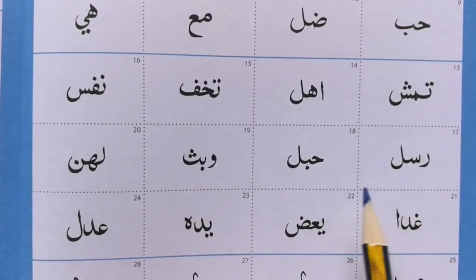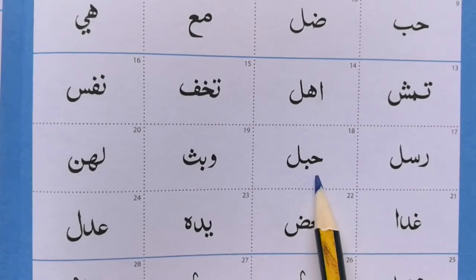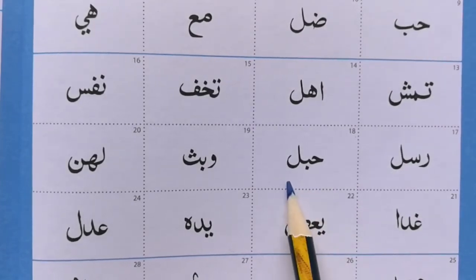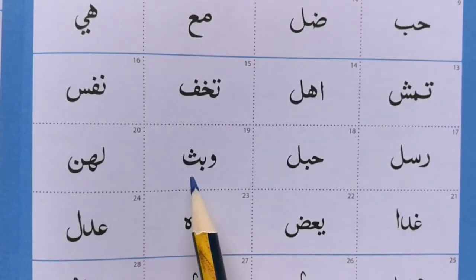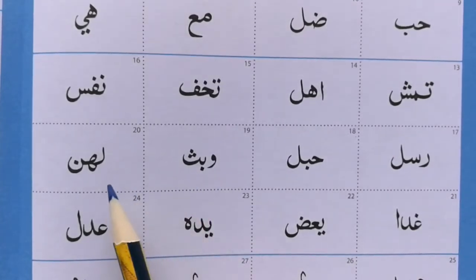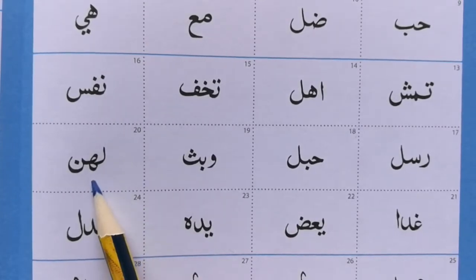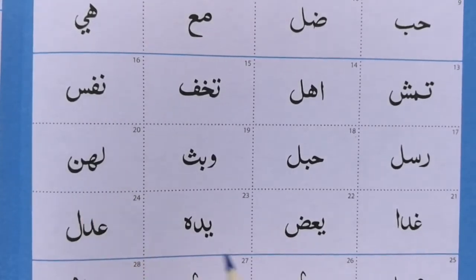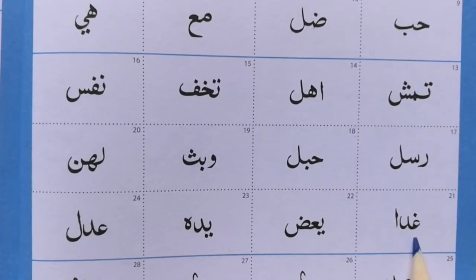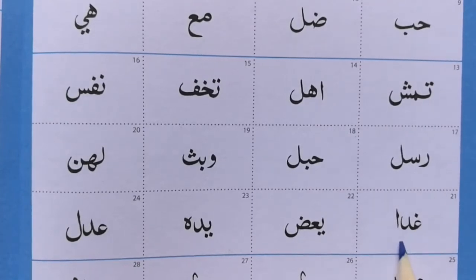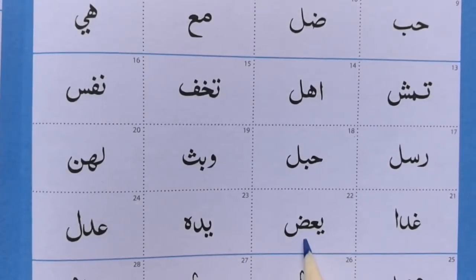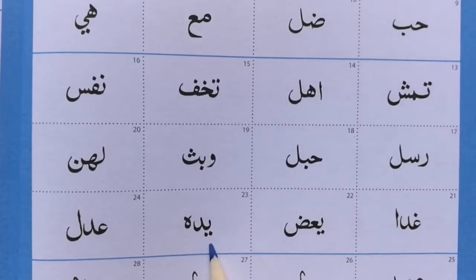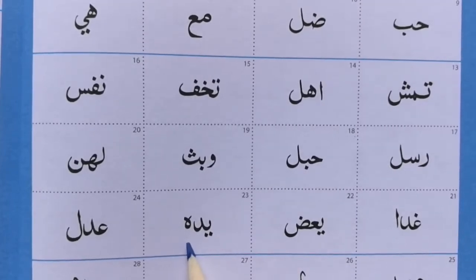Laam. Haa, Ba, Laam. Waaw, Ba, Faa. Laam, Laam, Haa, Laam, Haa. Gae, Daal, Alif. Laam, Haa, Laam, Haa. Gae, Gae. Daal, Haa.